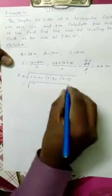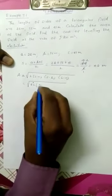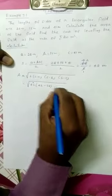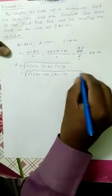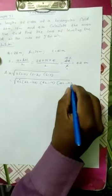Equals the square root of S. What is the value of S? 42. S minus A: 42 minus 28. Next, S minus B: 42 minus 15. S minus C: 42 minus 41.